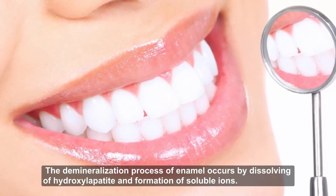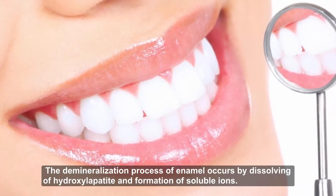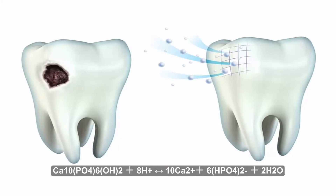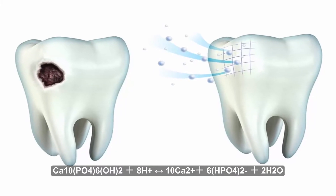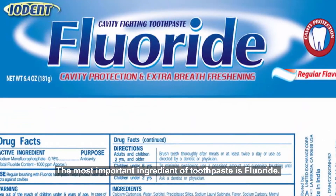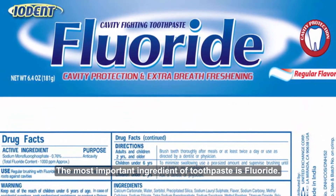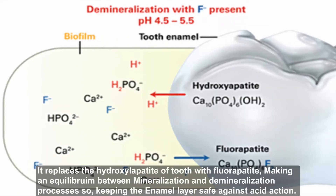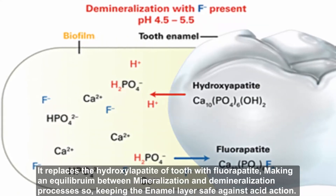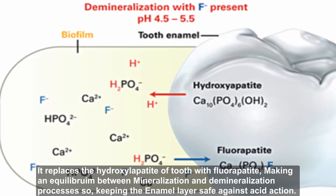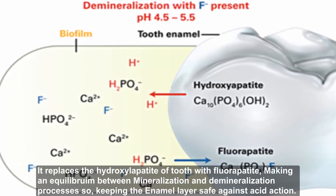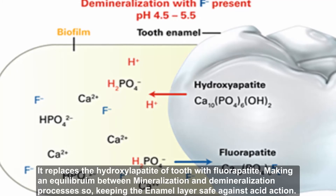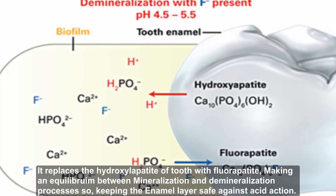The demineralization process of enamel occurs through the effect of acids, dissolving hydroxyapatite and forming soluble ions. The most important ingredient of toothpaste is fluoride. It replaces the hydroxyapatite of the tooth with fluorapatite, creating an equilibrium between mineralization and demineralization processes, thereby keeping the enamel layers safe against acid action.